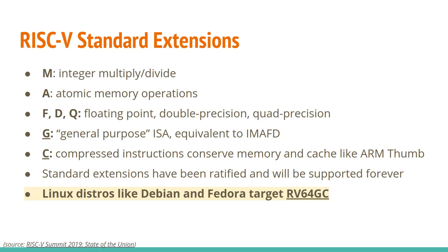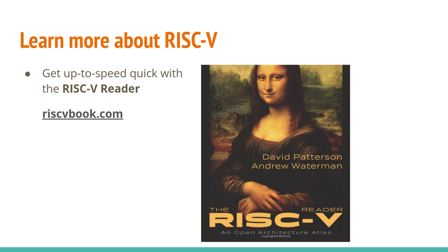The G in RV64GC stands for general purpose, and it's equivalent to integer, multiply, atomic, float, and double float, along with C for compressed instructions, similar to ARM Thumb. If you want to learn more about RISC-V, I highly recommend the RISC-V Reader — it's only about 100 pages, available in several different languages, and you can find out more at riscvbook.com.